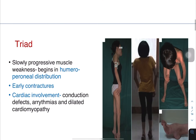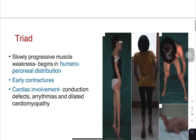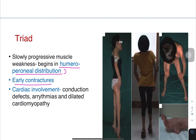The characteristic triad consists of a slowly progressive muscular weakness in a humero-peroneal distribution, early contractures in the course of the illness, and cardiac involvement in the form of conduction defects and arrhythmias and dilated cardiomyopathy.